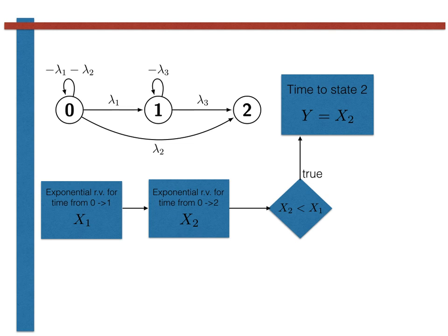If X2 is less than X1, the procedure is finished, as we have arrived in our final destination state, namely state 2. We then set the random variable, Y, that measures the total time it takes to get to state 2 equal to X2.